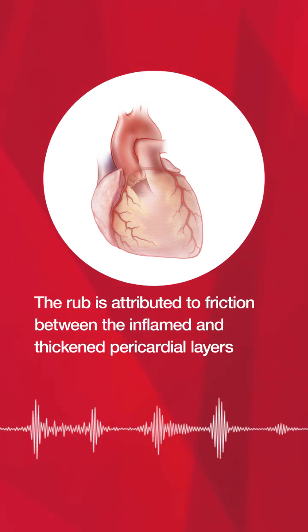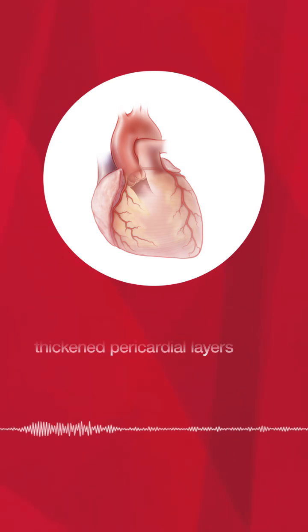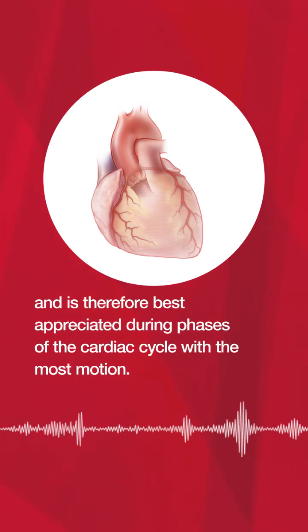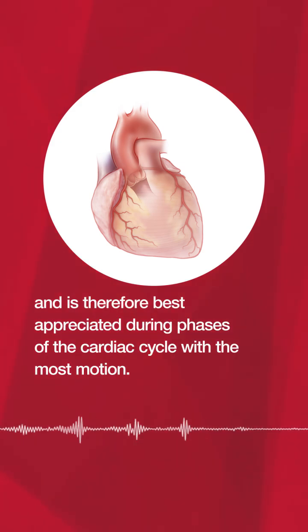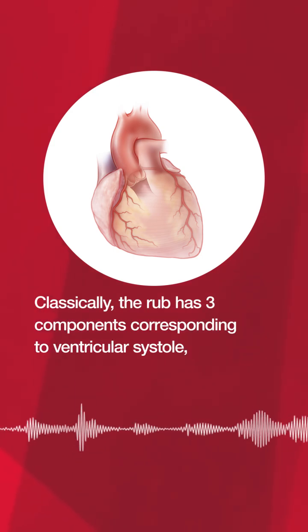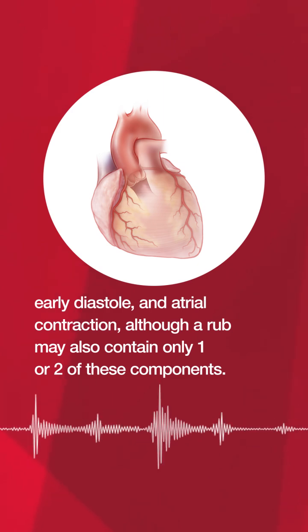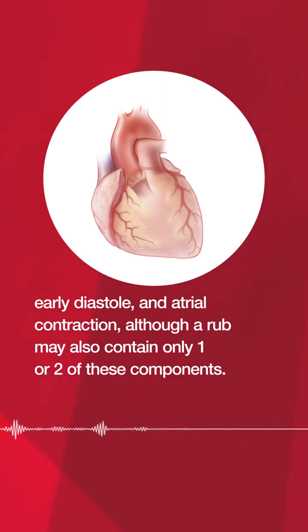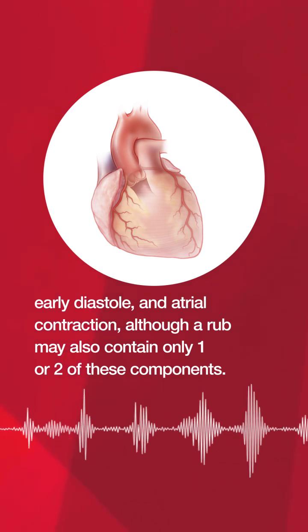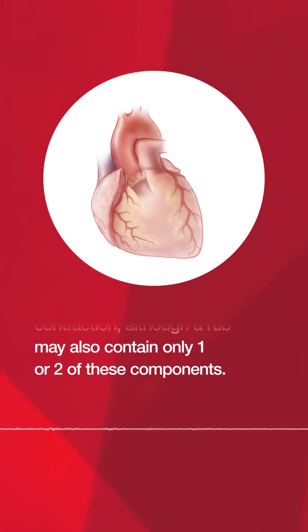The rub is attributed to friction between the inflamed and thickened pericardial layers and is therefore best appreciated during phases of the cardiac cycle with the most motion. Classically, the rub has three components corresponding to ventricular systole, early diastole, and atrial contraction, although a rub may also contain only one or two of these components.